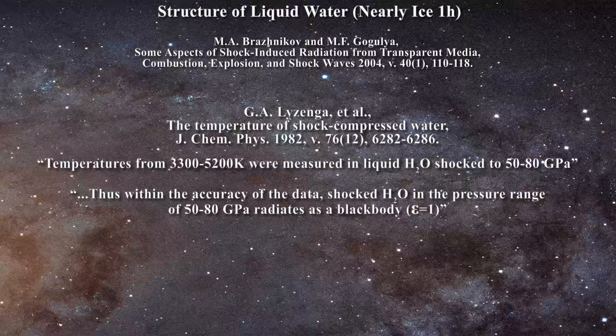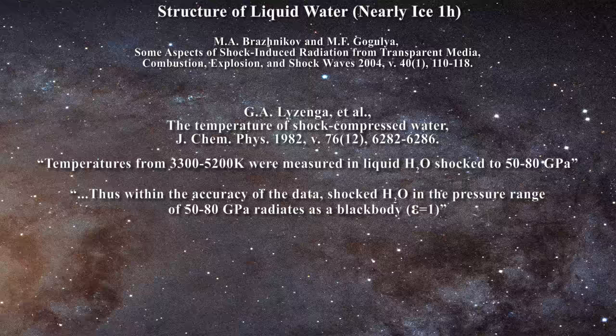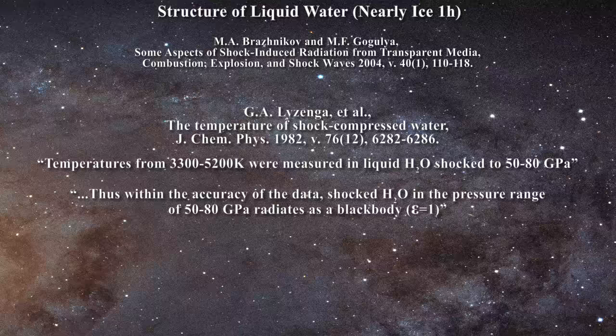Temperatures from 3300 to 5200 kelvin were measured in liquid water shocked to 50 to 80 gigapascals. Thus, within the accuracy of the data, shocked water in the pressure range of 50 to 80 gigapascals radiates as a black body, epsilon equals one.